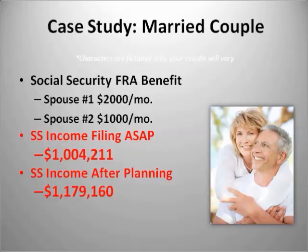This case study looks at a married couple — one spouse with a $2,000 monthly benefit and the second spouse with $1,000 a month. This takes advantage of the switching strategies available under the old rules. Filing as soon as possible, the total lifetime benefit for these two individuals — male life expectancy 85, wife 90 — would be just over $1.04 million. With proper planning using available strategies, that benefit increased to $1.179 million — roughly a $175,000 increase.